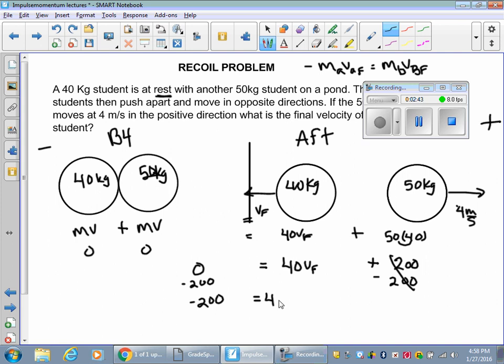So 0 minus 200, right? So 0 minus 200 is going to be negative 200 equals 40 times velocity final. How do I get rid of 40? Divide. Divide by 40. And how many times is 40 going to negative 200? Let's see, negative 200 divided by 40. Should have already gotten it before me, but oh well.